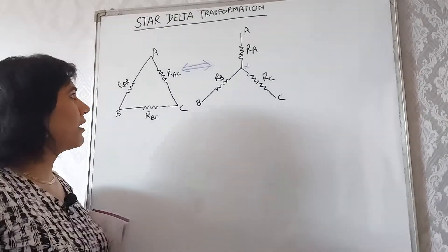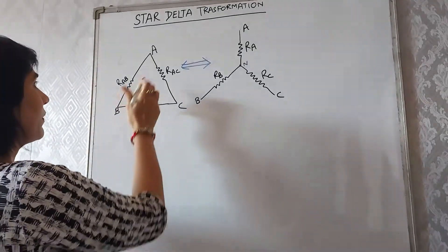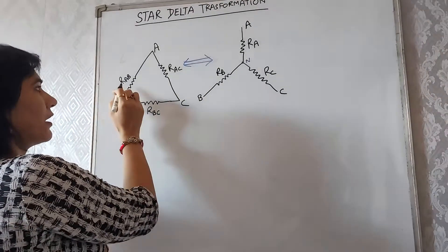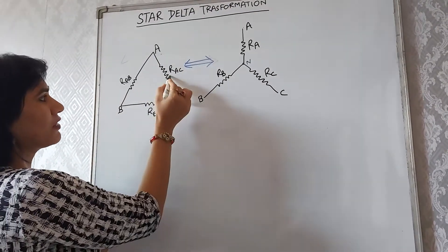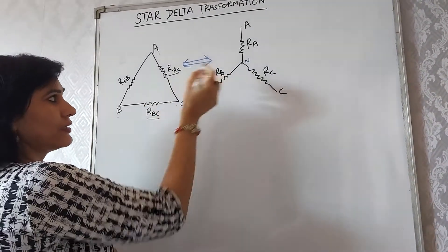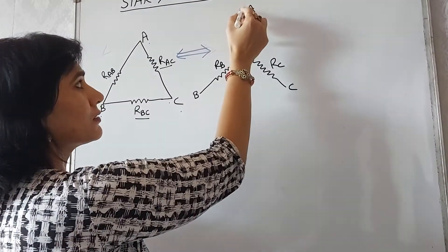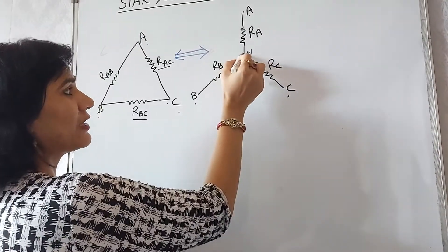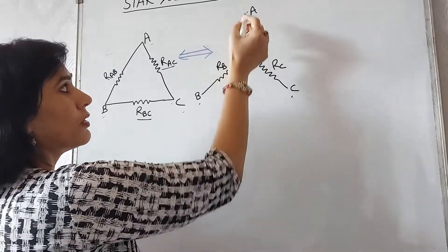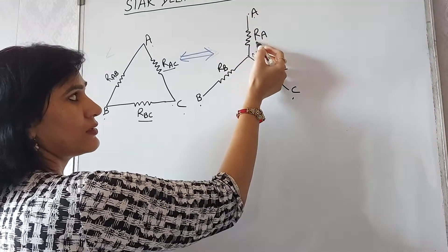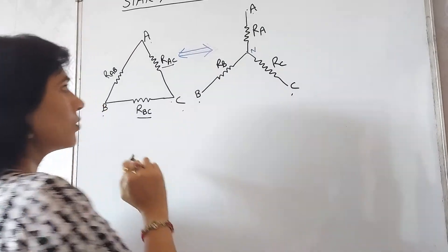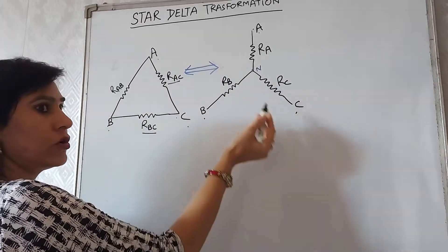First of all, when we have a triangular-shaped circuit, that is known as a delta circuit, in which we have terminals A, B, and C. Between A and B we have resistance R_AB, between A and C we have resistance R_AC, and between B and C we have resistance R_BC. This circuit is converted into the star, which also has three terminals A, B, and C, with N as the common node where resistances R_A, R_B, and R_C meet.